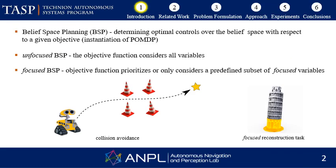In belief space planning problems, a robot has to autonomously determine its next action from a set of candidate actions while reasoning about future belief evolution. In different tasks, however, specific landmarks within the map or certain states of the robot might be more important than others. In such tasks, the objective function prioritizes, or maybe even only considers, a predefined subset of focused variables.